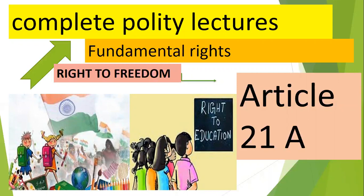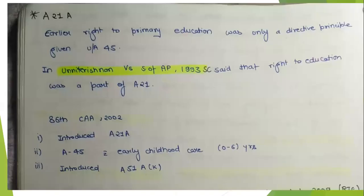Let's start Article 21A. Article 21A provides that children in the age group of 6 to 14 years need to be given free and compulsory education in a manner prescribed by law.